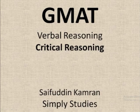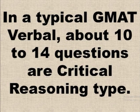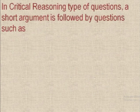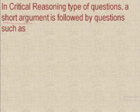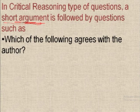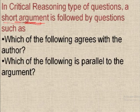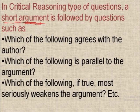GMAT Verbal Reasoning Critical Reasoning. Let's do GMAT Critical Reasoning. In a typical GMAT Verbal Reasoning, about 10 to 14 questions are critical reasoning type. What comes in critical reasoning? A short argument is followed by some questions, such as which of the following agrees with the author, which of the following is parallel to the argument, or which of the following if true most seriously weakens the argument, etc.